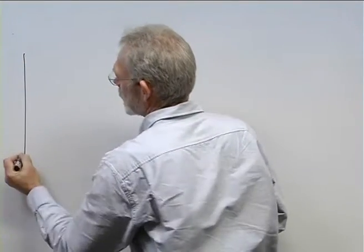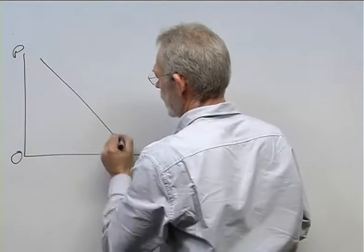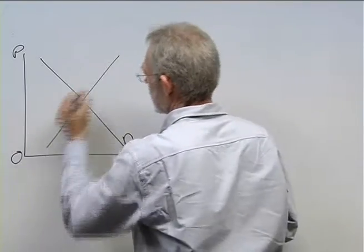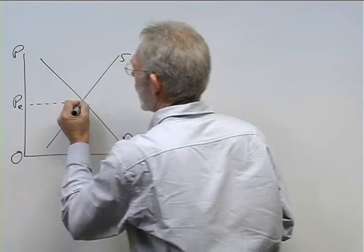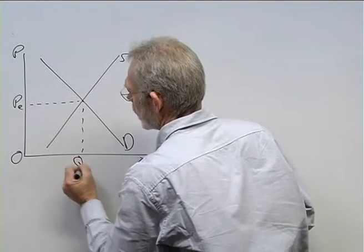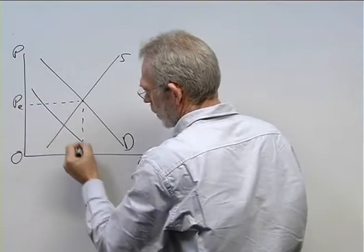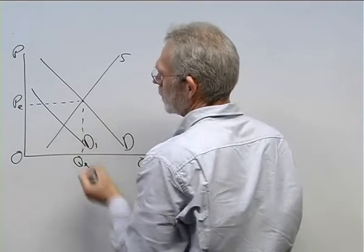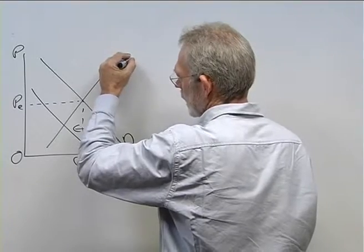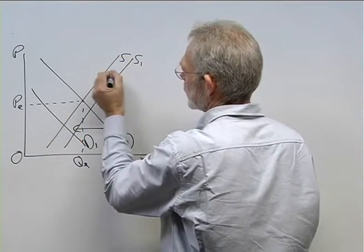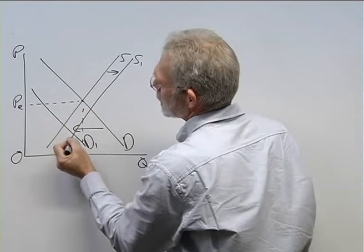We start off with a picture of the market. We have demand and supply, equilibrium price, and equilibrium quantity. Now we have a decrease in demand, shown by a leftward shift of the demand curve, accompanied by an increase in supply — a rightward shift of the supply curve. And we find we move from this equilibrium position to this one.